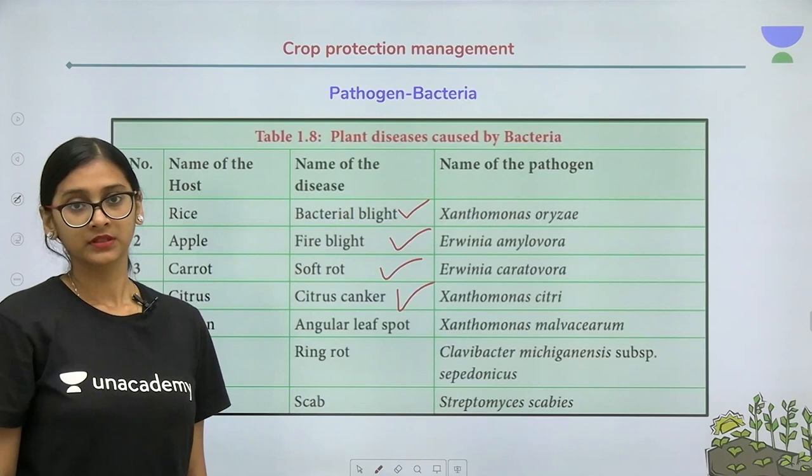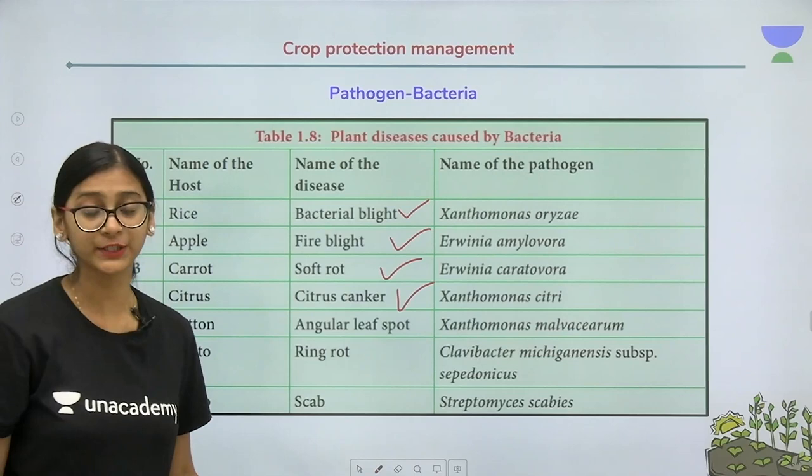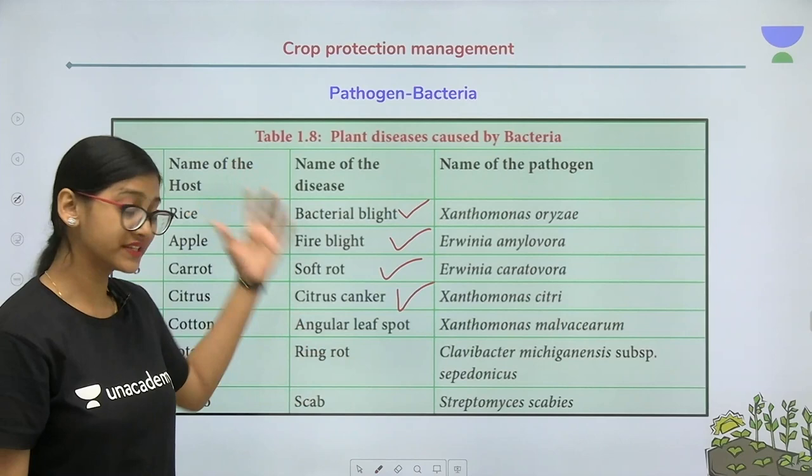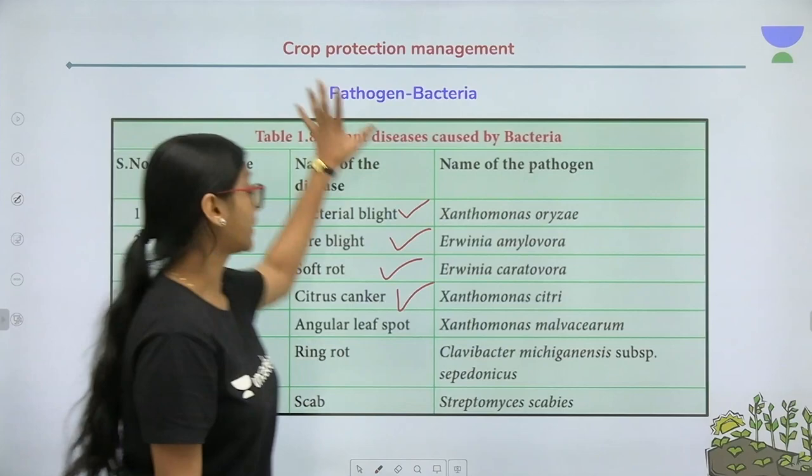Tikka disease in groundnut is a soil-borne disease. Blast disease in rice and smut diseases are airborne diseases. Late blight is a waterborne disease. So there are many types — airborne, waterborne, soil-borne, and seed-borne — and plants are highly vulnerable to different types of diseases.